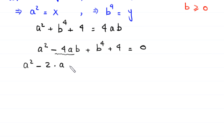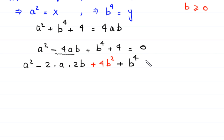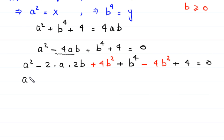The term negative 4ab can be written as negative 2 times a times 2b. To complete the square, we add 4b squared and then subtract 4b squared to balance, giving a squared minus 2 times a times 2b plus 4b squared plus b to the power 4 minus 4b squared plus 4 equals 0.